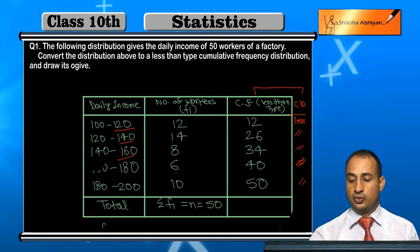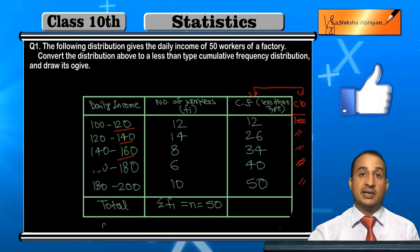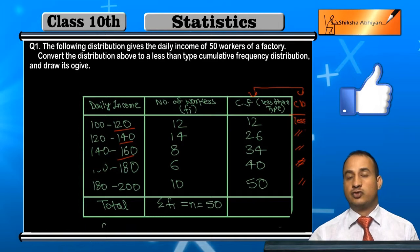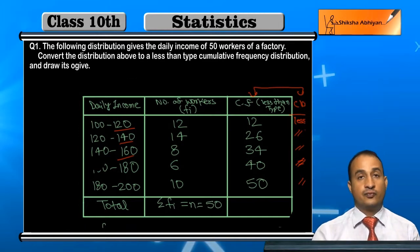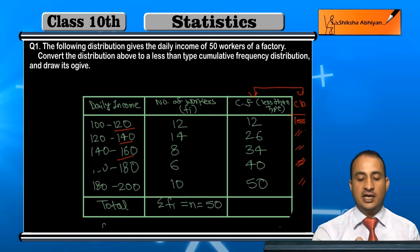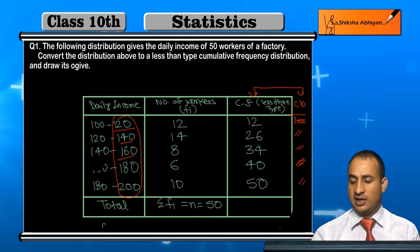So you can see that these two columns form the less than type cumulative frequency table. Now we will draw the graph and identify the points for the less than type ogive. These are the points — you can see that 120 corresponds to the cumulative frequencies.